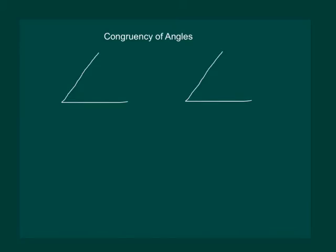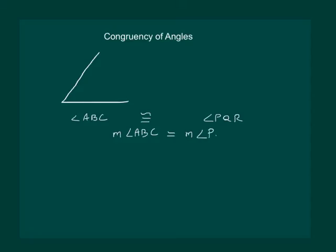Let us consider two angles. Let the first one be angle ABC and the second one be angle PQR. Let us now try to superimpose one angle on the other. Clearly, we can see they are exactly the same. So we can say that angle ABC is congruent to angle PQR.